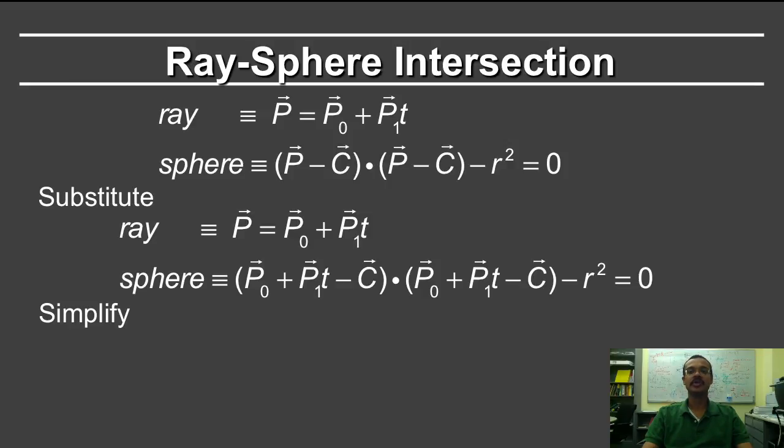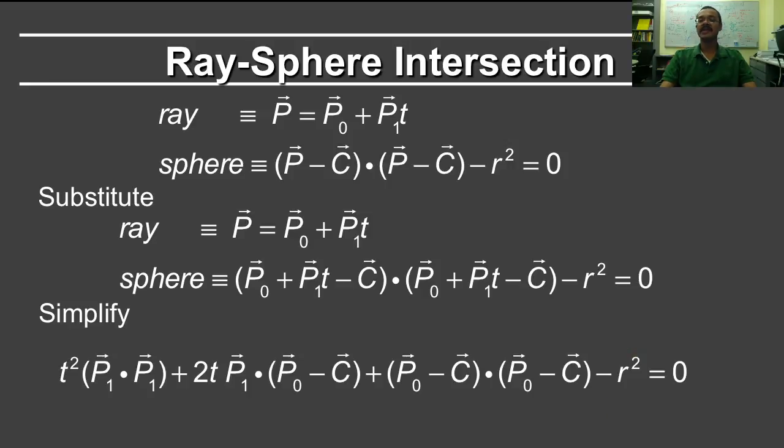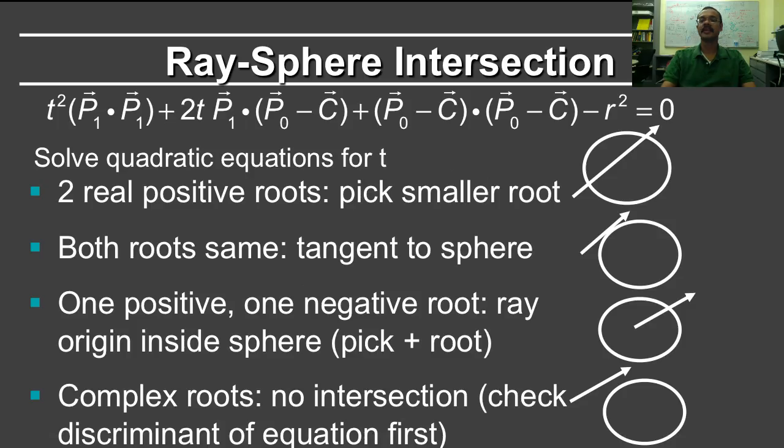Looking at this equation, you can easily see that it's in fact a quadratic equation. And we can find the coefficients of the various quadratic, linear, and the constant terms. Once we've done that, it's a simple matter of solving a quadratic equation, which all of you are familiar with from high school algebra. There are many possibilities that can arise from looking at the discriminant of this equation, so you should definitely check the discriminant first.